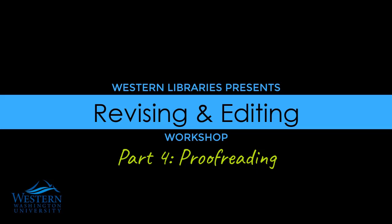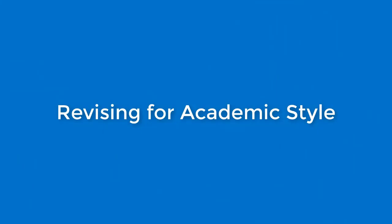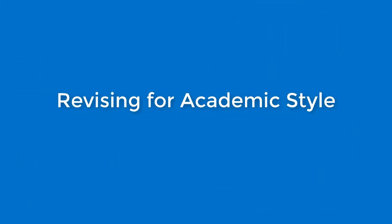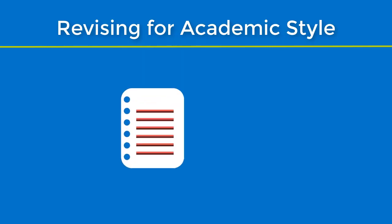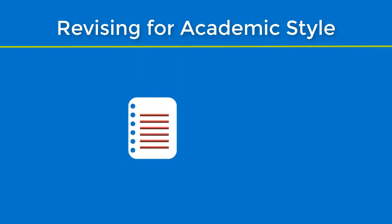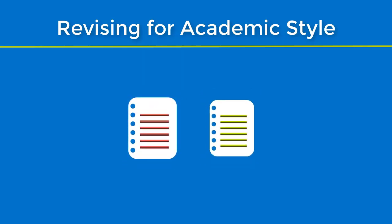After revising your paper, and possibly your thesis, it's time to review your paper for style. Academic style is something that can be different from discipline to discipline. A scholarly journal article in psychology will have a different style than one in history. However, there are some generalizations we can make.